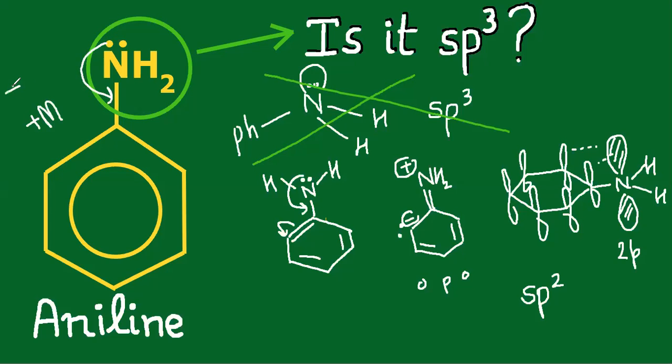And this is the reason why aniline is not a good quality base - it's a poor base. You will find that its pKb is very high in comparison to ammonia or other amines. So remember that aniline nitrogen is not sp3 hybridized. Do not go to the conclusion like that - first learn the basics and then come to the decision of hybridization.